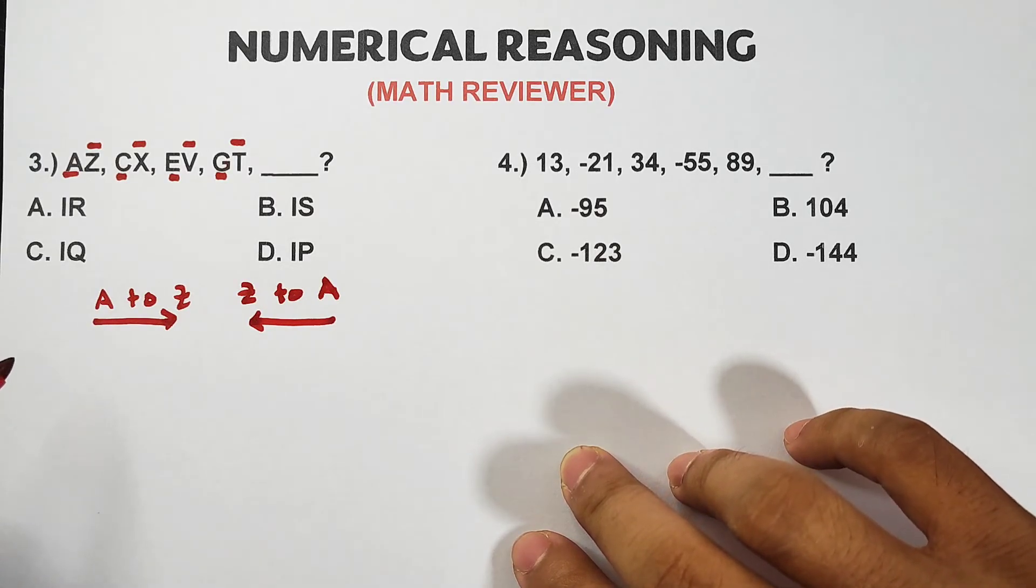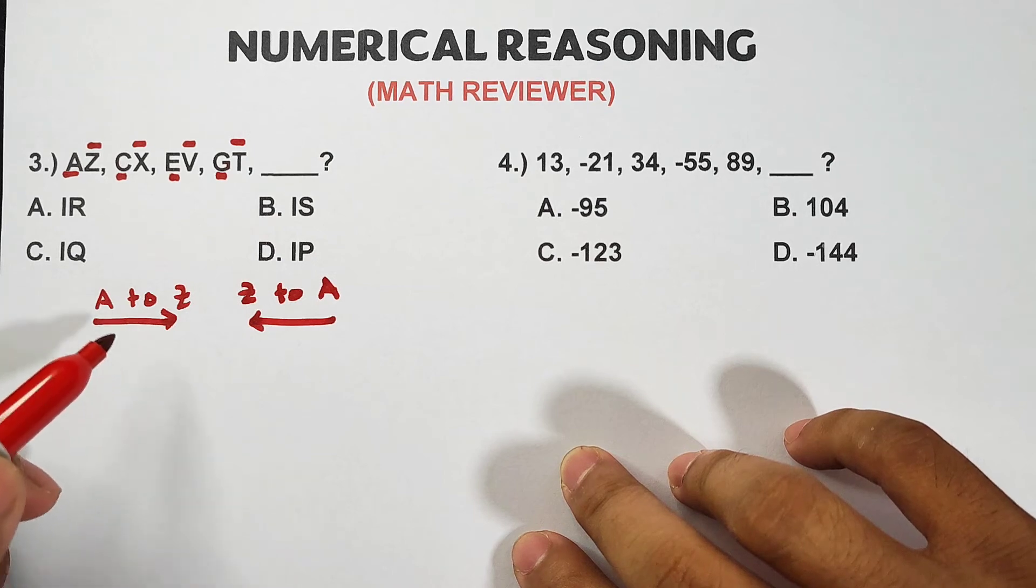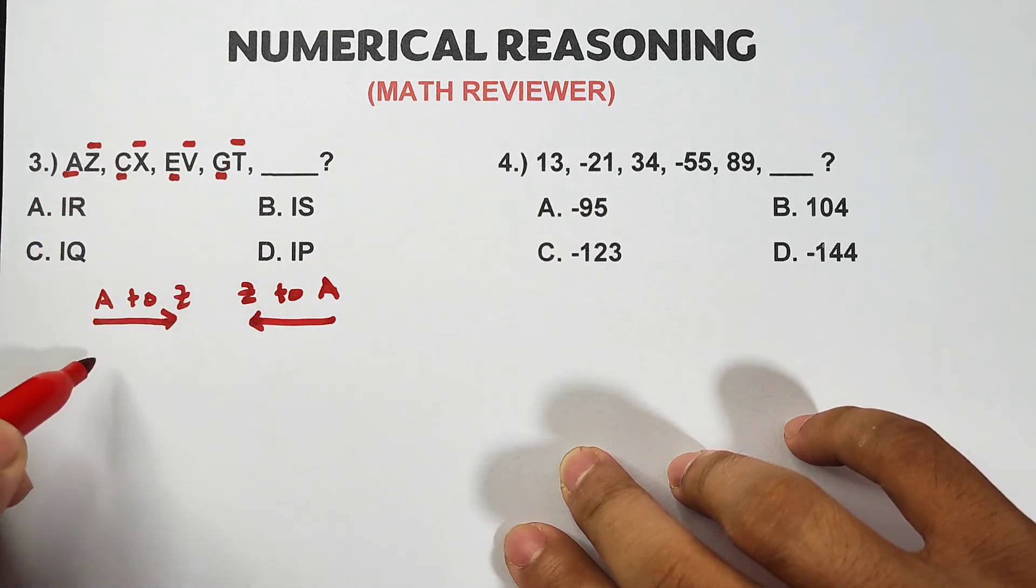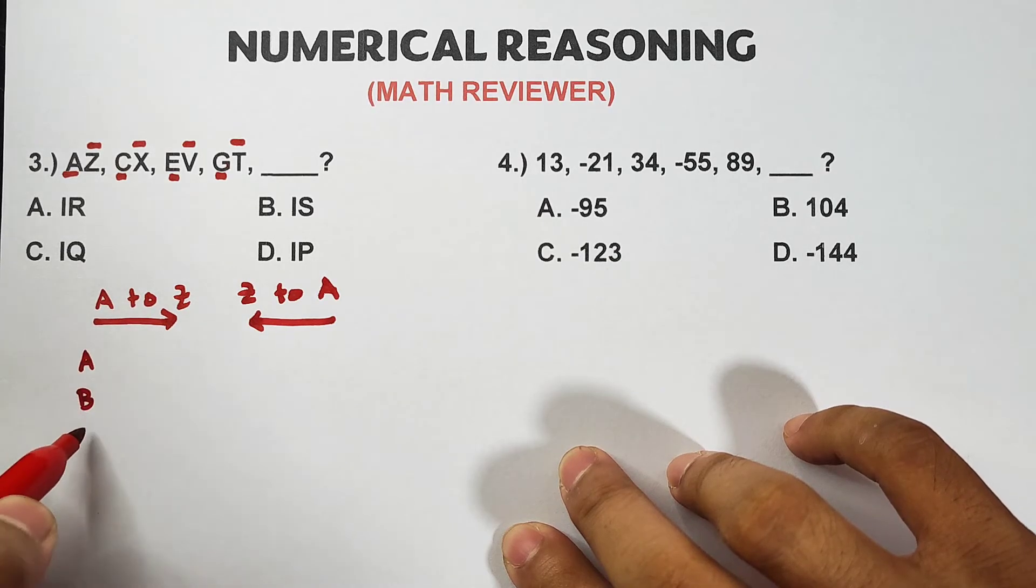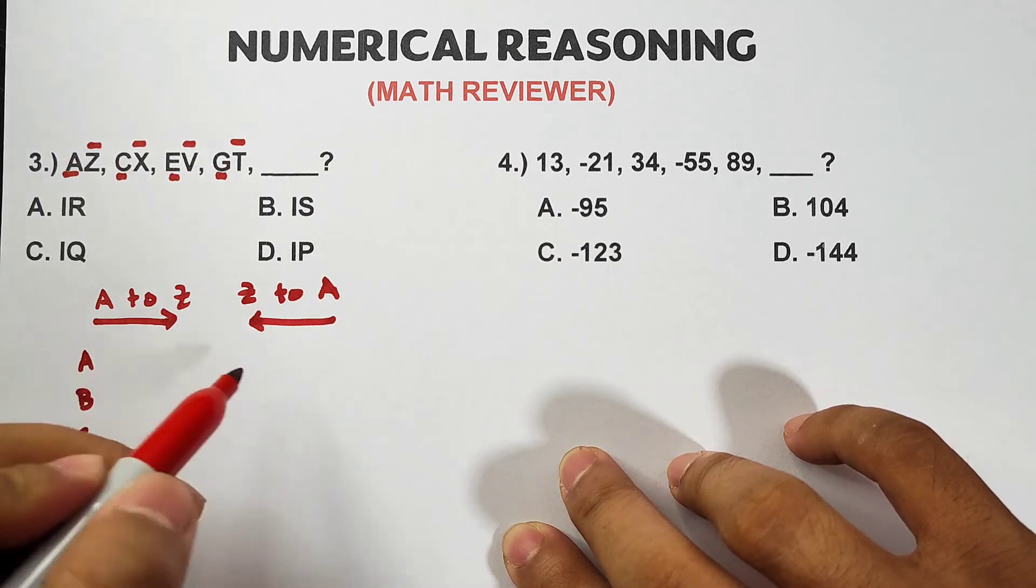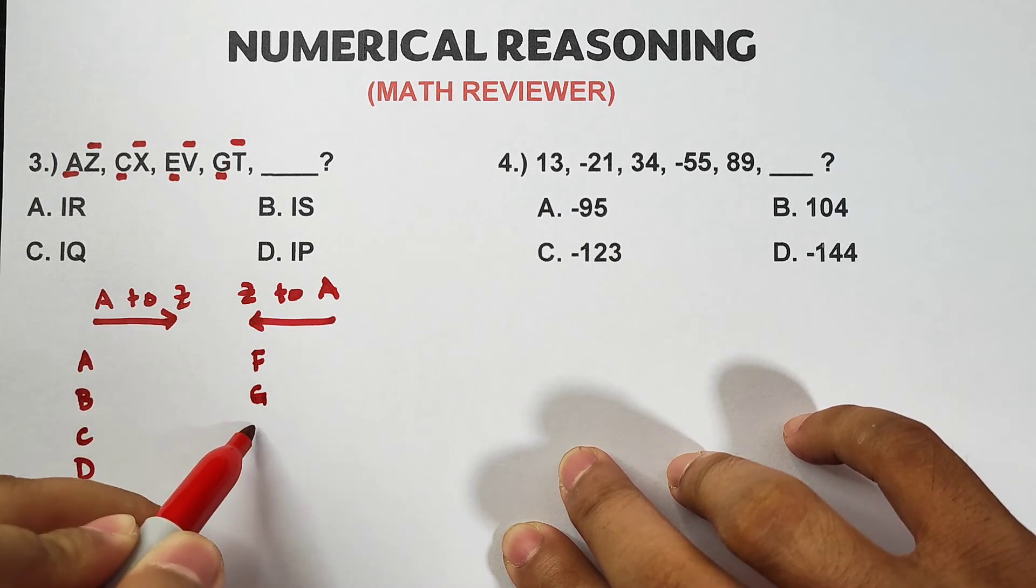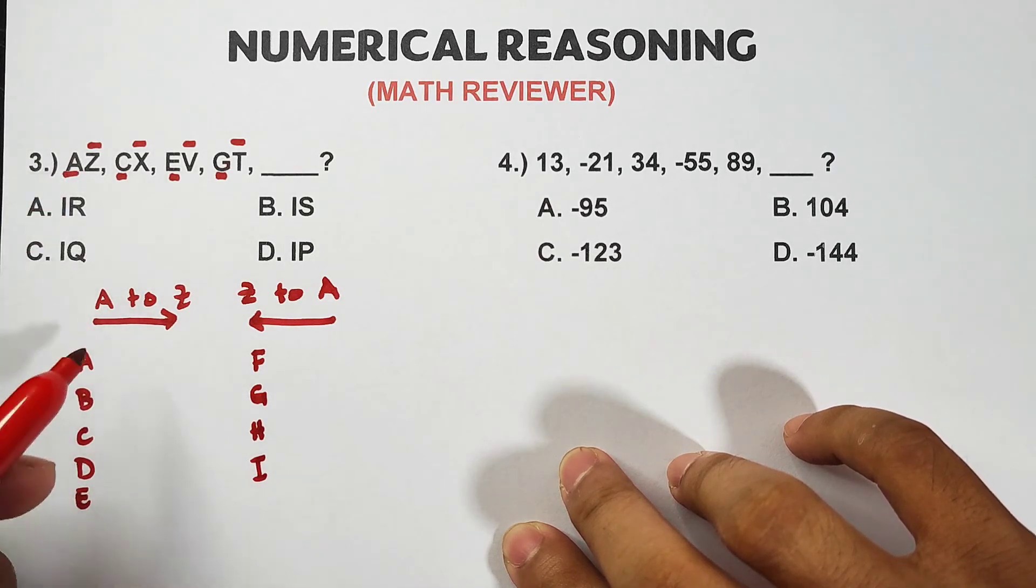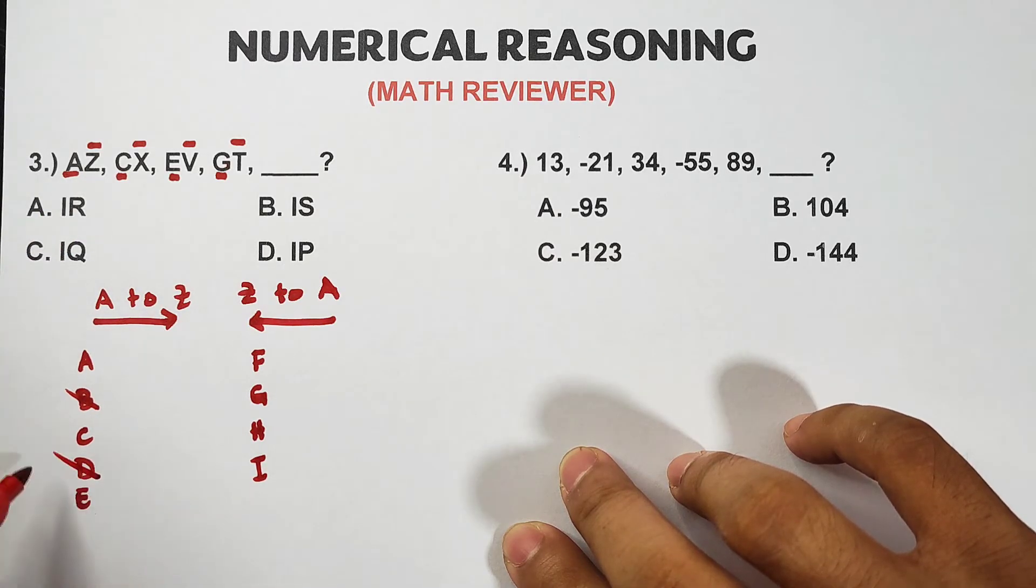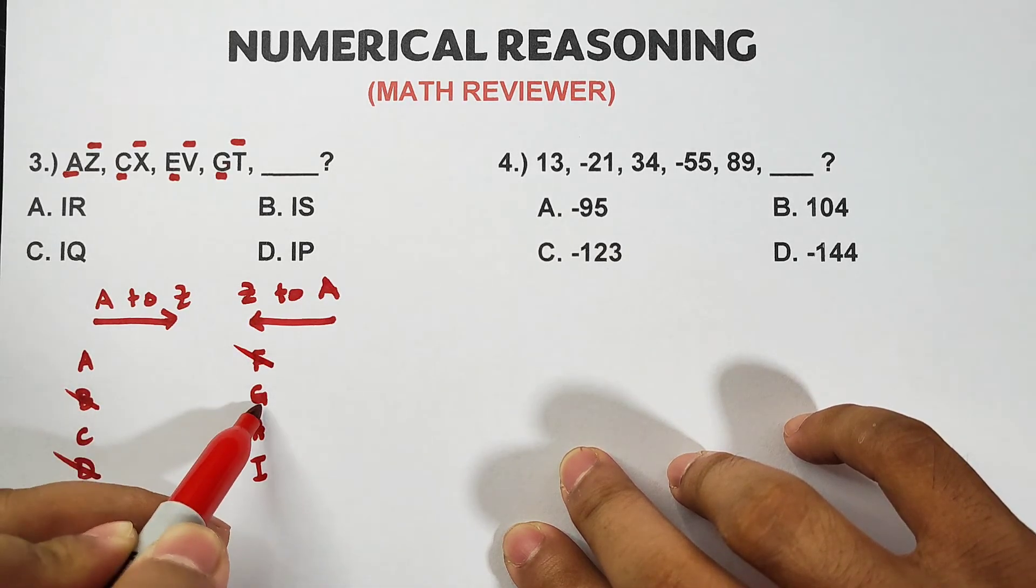So we need to get the pattern for A to Z: A, C, E, G. Let me check: A, B, C, D, E, F, G, H, I. If you notice, from A we have letter C, you skip letter B. From C we have letter E, letter D is skipped but we have letter E, then skip F, followed by letter G. So most likely H is skipped, meaning the missing letters, the first letter is letter I.